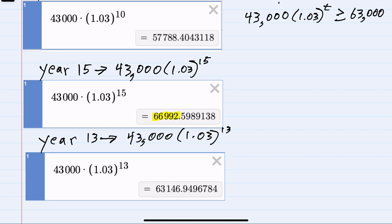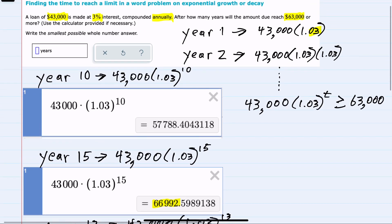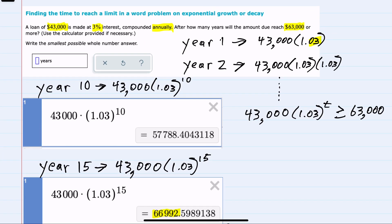And this time I can see that the amount due after 13 years has just crossed over the $63,000 mark. So our original question of after how many years will the amount due reach $63,000 or more, that would happen after 13 years.